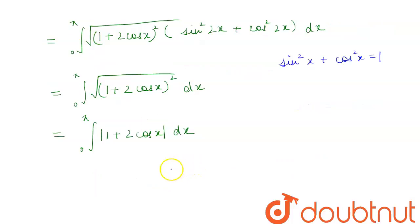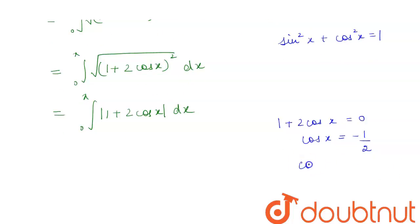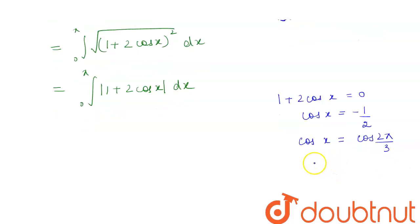We need to find where 1 + 2cosx is positive and where it is negative. Setting 1 + 2cosx = 0 gives cosx = −1/2. Since cos(2π/3) = −1/2, we get x = 2π/3.